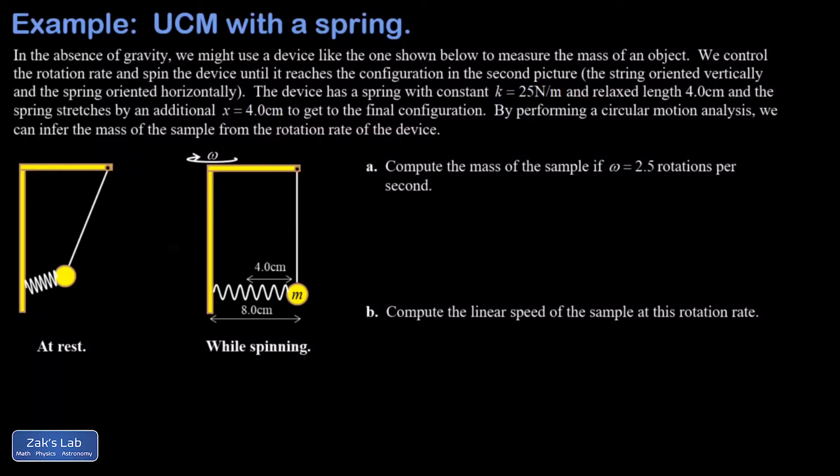In this problem we've built a simple machine for measuring mass without relying on gravity. The mass is hooked up to this spring that has a relaxed length of four centimeters, and then you start rotating the device and the spring is going to stretch until this rod becomes vertical. At that point the spring is now eight centimeters long - in other words it's been stretched by an additional four centimeters relative to its equilibrium length.